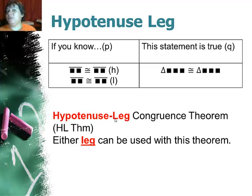By the way, there's also a leg-leg theorem. Same idea. If you know two legs, then you automatically know the hypotenuse using the Pythagorean theorem. So you can actually use either a leg with a hypotenuse or you could even do two legs.